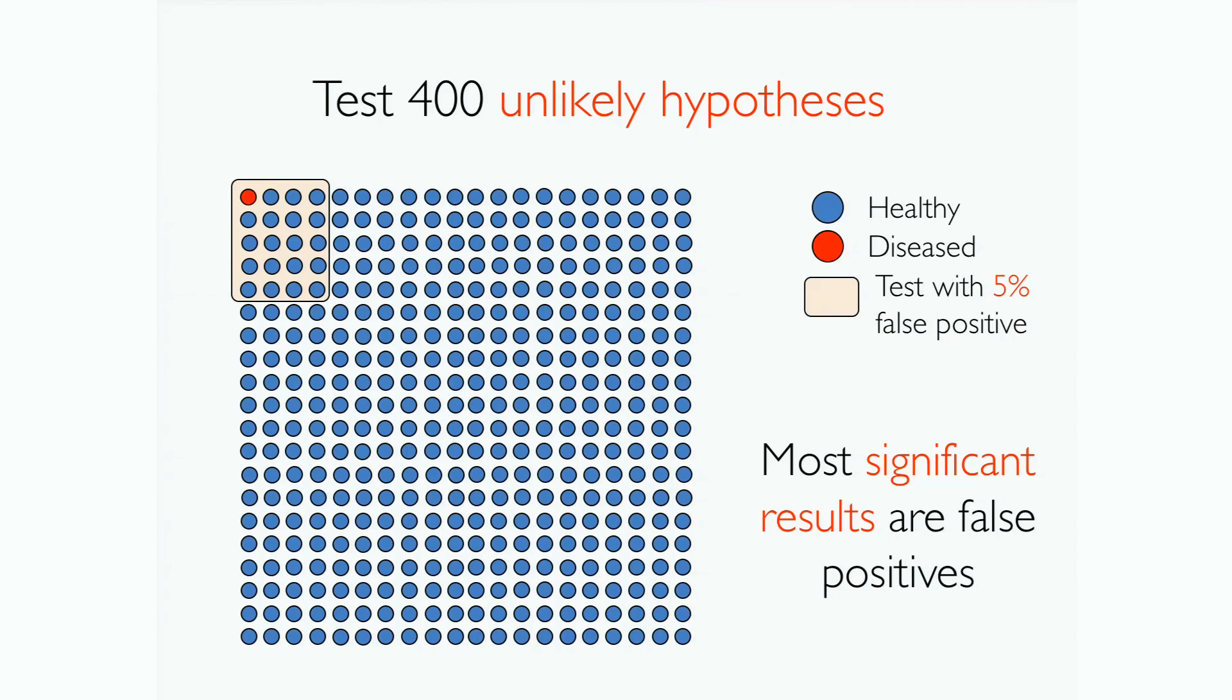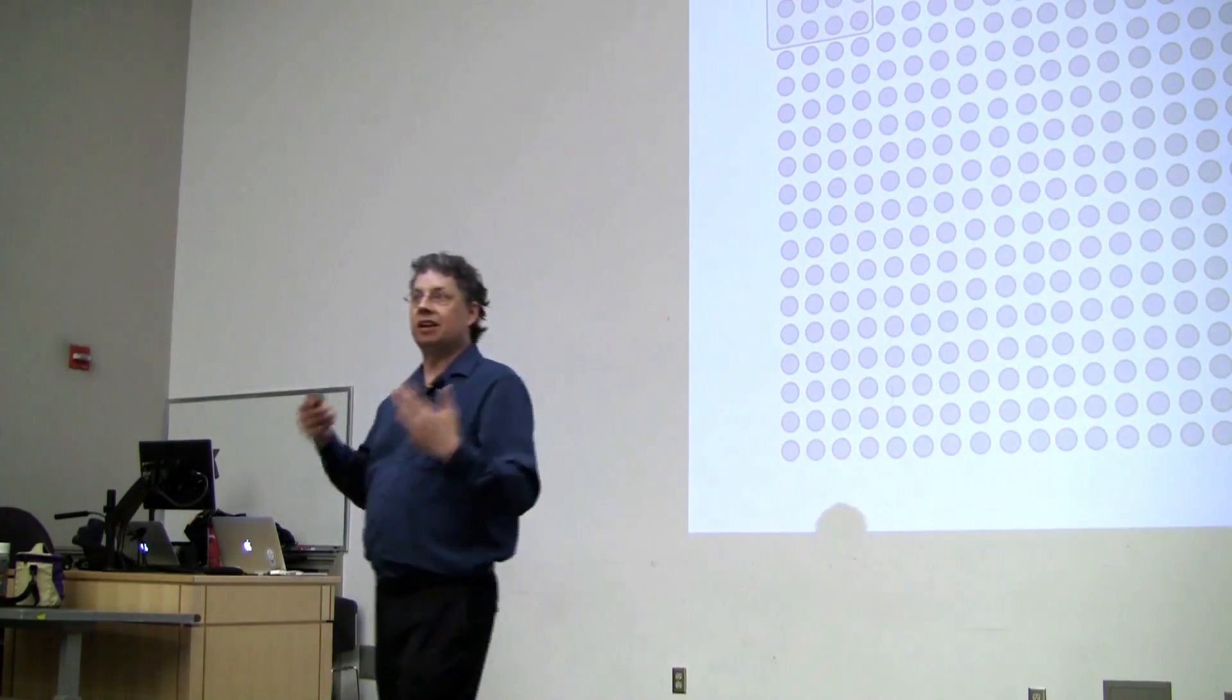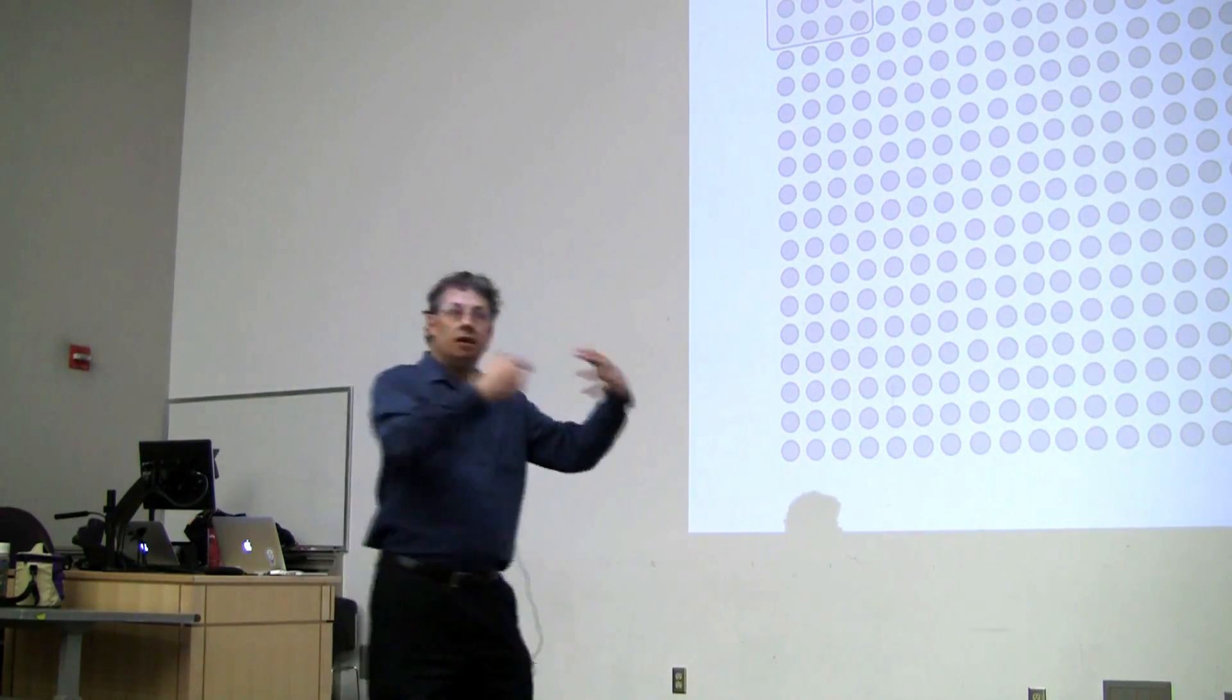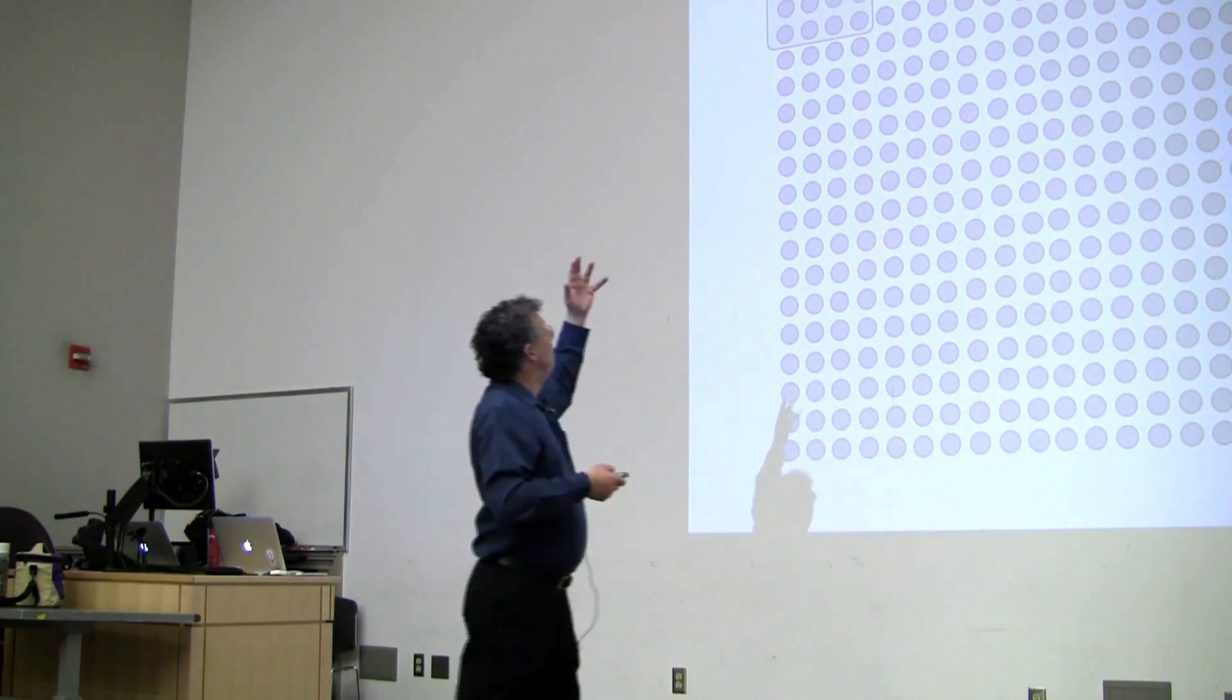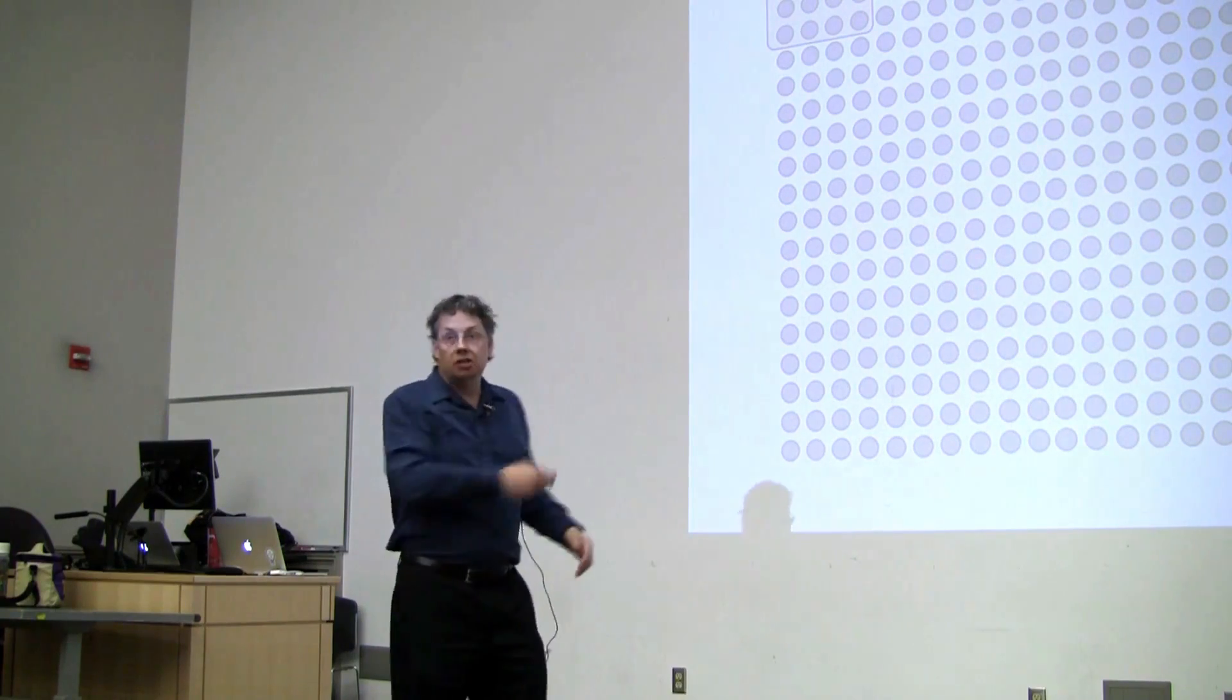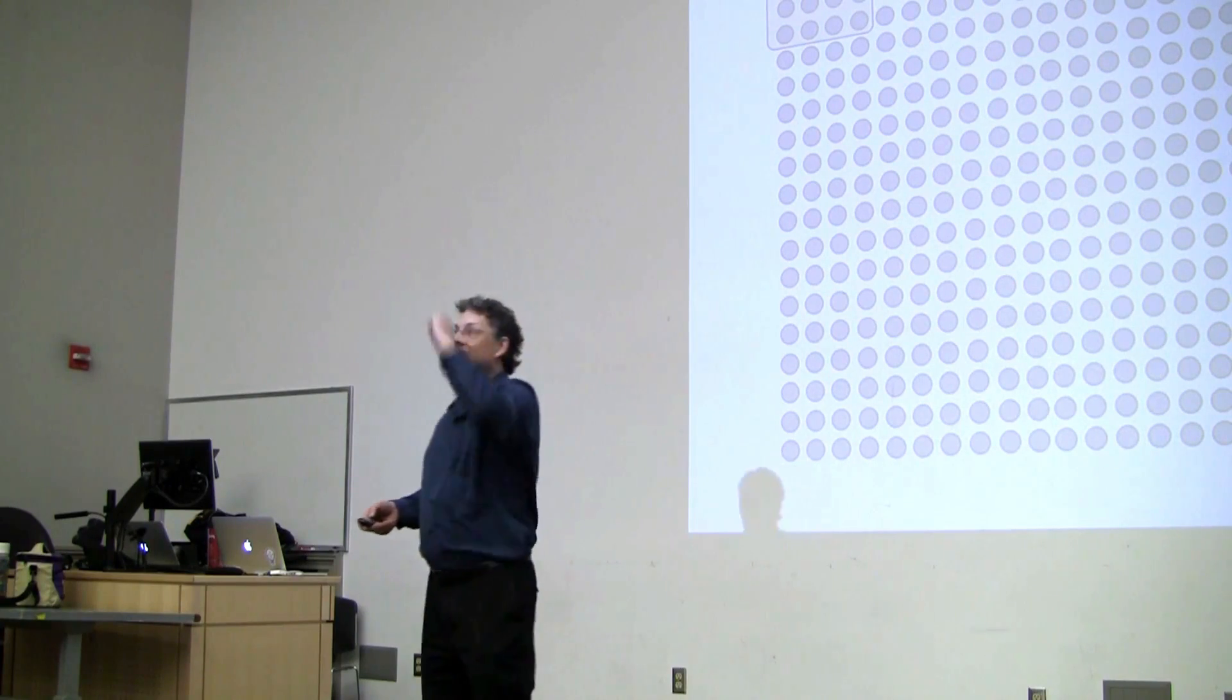And in this case, this is an unlikely hypothesis, so only 1 in 400 is right. And then we get all of these false positives. And so in this case, most of the significant results, the ones that were statistically significant, are indeed false. So that's the logic that Ioannidis is bringing to this. So we've got this problem that by not publishing the negative stuff, we're in trouble. And then we've got this additional problem that the positives that we do have may be mostly false positives.